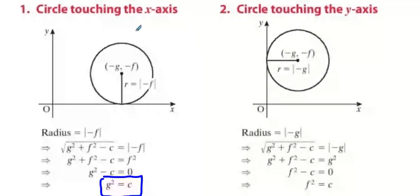What we're going to do here is circle touching the x-axis, we're going to use g squared equals c. Circle touching the y-axis, we're going to use f squared equals c. If both axes are touching, it's g squared equals f squared equals c.